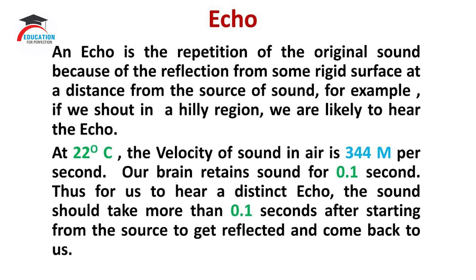Now friends, let us try to understand the term echo in sound. An echo is the repetition of the original sound because of the reflection from some rigid surface at a distance from the source of sound. For example, if we shout in a hilly region, we are likely to hear the echo. At 22 degrees Celsius, the velocity of sound in air is 344 meters per second.